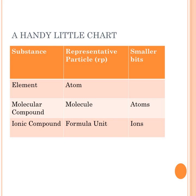That CO₂ molecule can be broken down into smaller parts using chemical means. Every time you have one molecule of CO₂, you have one carbon atom and two oxygen atoms. If you had 10 molecules of CO₂, you'd distribute that 10 and have 10 atoms of carbon and 20 atoms of oxygen.